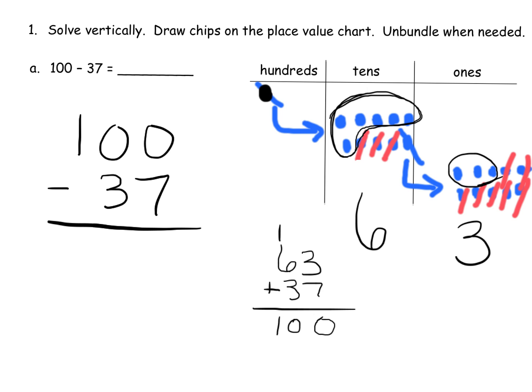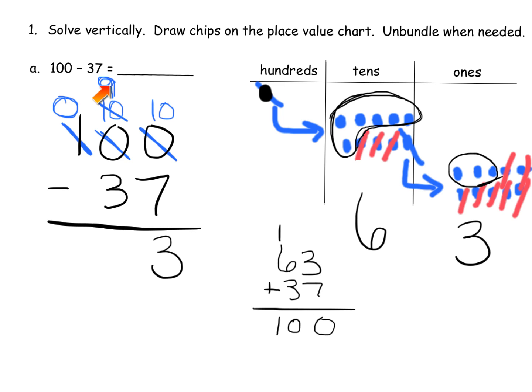Now let's do this using the standard algorithm. We need to take away seven from zero, which we can't do, so we're going to have to unbundle twice. We unbundle 100, leaving zero hundreds, and that gives us 10 tens. Then we unbundle one of the tens, leaving nine tens, giving us 10 ones — two steps. Now: 10 ones minus 7 ones gives three ones; nine tens minus three tens gives six tens; zero hundreds minus zero hundreds leaves nothing. Our answer is 63.